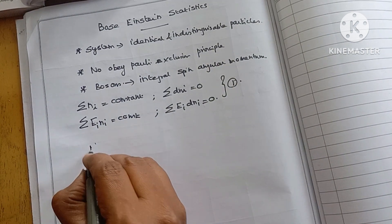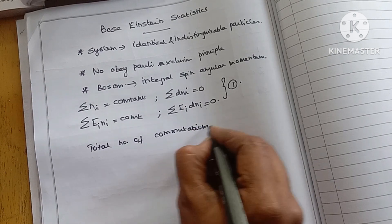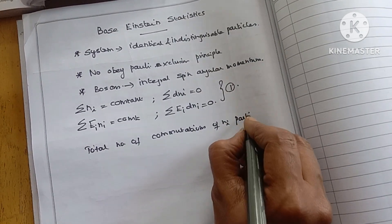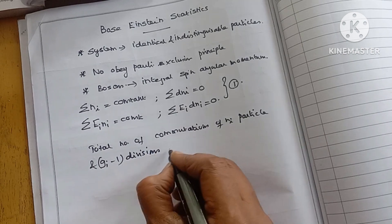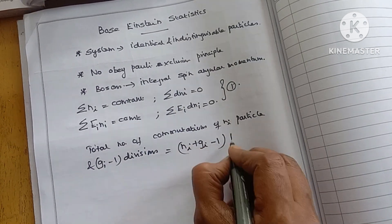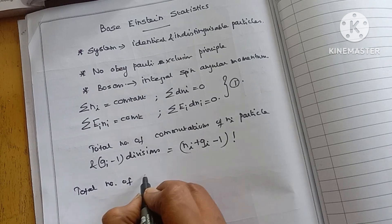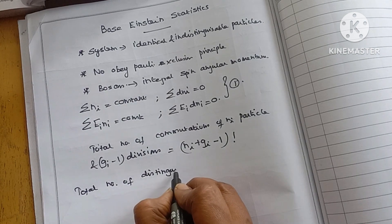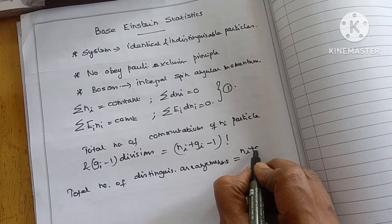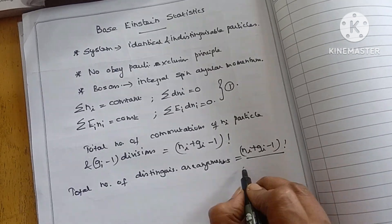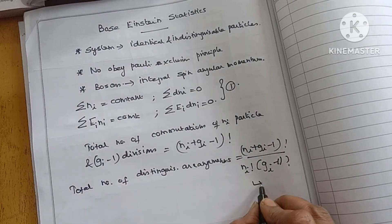The total number of permutations of Ni particles with Gi minus 1 divisions can be written as (Ni + Gi - 1) factorial. The total number of distinguishable arrangements is equal to (Ni + Gi - 1) factorial divided by Ni factorial times (Gi - 1) factorial. This is equation number 2.